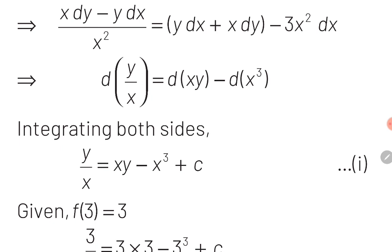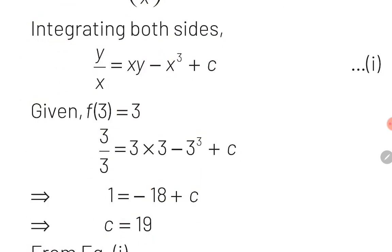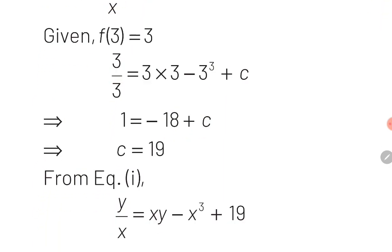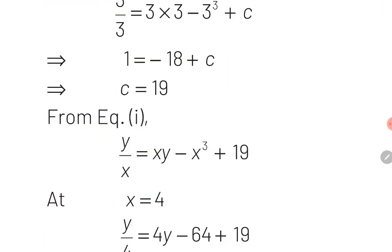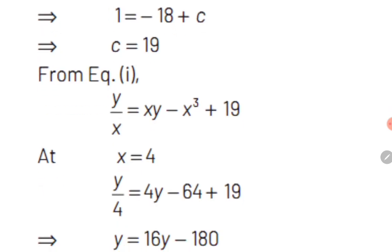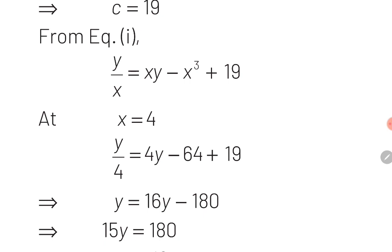Integrating both sides, the integration and derivative symbols cancel: y/x = xy - x³ + c. Using the condition y(3) = 3: 3/3 = 3·3 - 27 + c, so 1 = 9 - 27 + c, giving c = 19. Therefore the final solution is y/x = xy - x³ + 19. To find y(4), substitute x = 4.